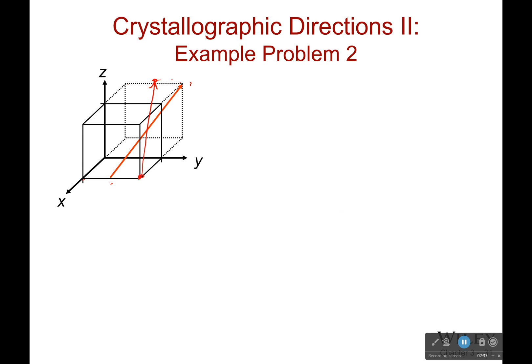So first off, what is the point coordinate of the tail? Well, I go a distance a in the x, I go a distance b in the y, and I go a distance 0 in the z or c.